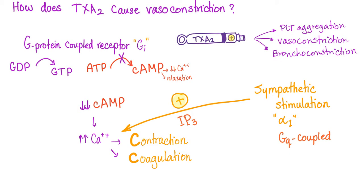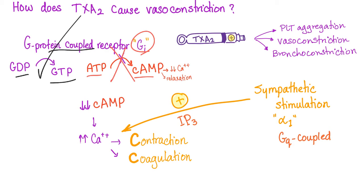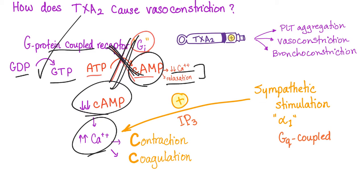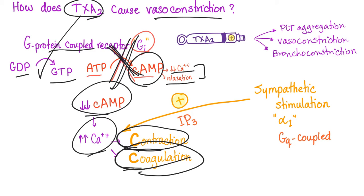How does thromboxane A2 actually cause vasoconstriction? It acts on a G-protein-coupled receptor, specifically Gi (inhibitory). Two things happen simultaneously: GDP is converted to GTP, and there is another pathway where ATP is converted to cyclic AMP by adenylate cyclase — but the Gi inhibits this cyclic AMP formation. Cyclic AMP normally decreases calcium and causes relaxation. So when you have less cyclic AMP, you have more calcium — calcium causes contraction and coagulation. That's how thromboxane A2 causes vasoconstriction and enhanced platelet aggregation.